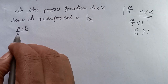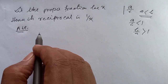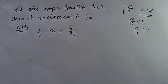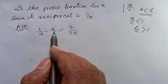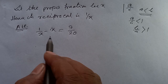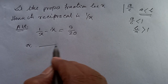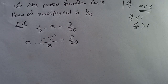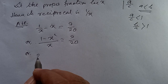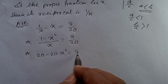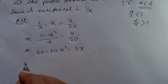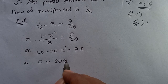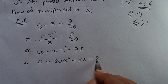According to the problem, the reciprocal is greater than the fraction, so 1/x minus x equals 9/20. We see the difference: 1/x minus x equals 9/20. Cross multiplying, we get 20 times (1 minus x squared) equals 9x, which gives us 20x squared plus 9x minus 20 equals 0.